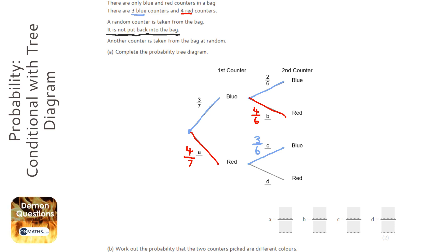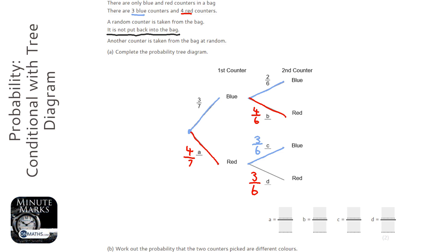The probability of picking a red: there were four before we picked one, but since we picked a red there are three reds left and six left altogether. I'm deliberately not cancelling these down — I could simplify them, but I'll leave them as they are for now just to keep things simpler.